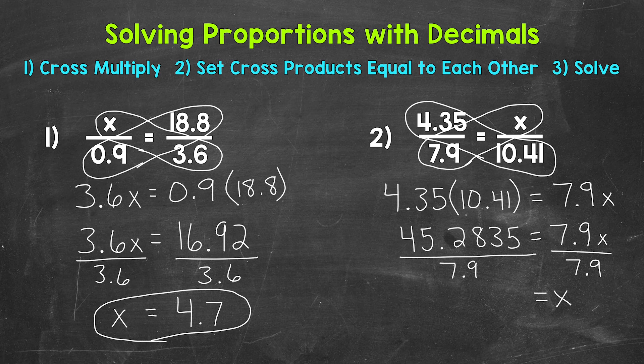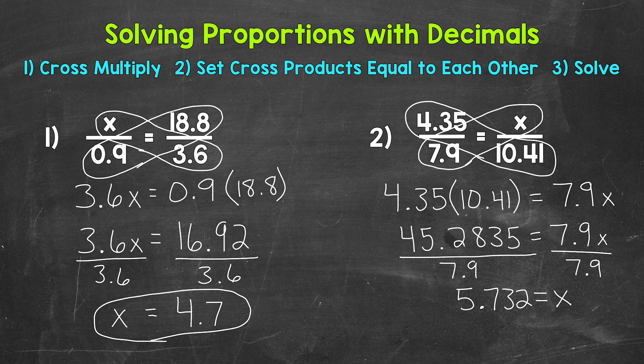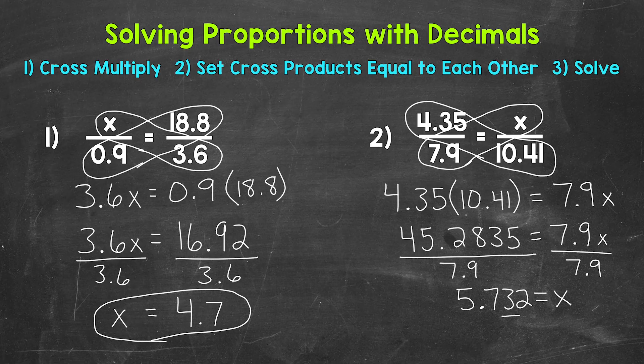And then we have 45 and 2,835 ten thousandths divided by 7 and 9 tenths. This is going to give us a decimal that has digits that repeat. So I'm just going to write it to the thousandths place. And then we will round to the hundredths. This gives us 5 and 732 thousandths. That decimal actually has digits that repeat. So it goes on forever. I cut it off after the thousandths and then we are going to round to the hundredths.